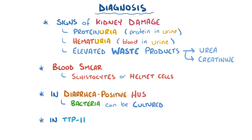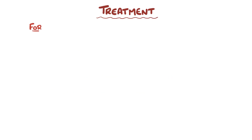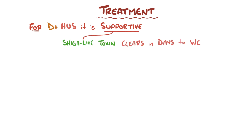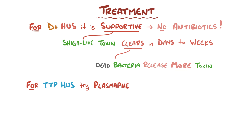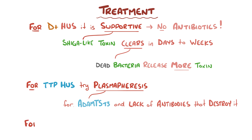In suspected TTP-HUS, ADAMTS13 activity in the plasma can be measured. Treatment of typical or diarrhea-positive hemolytic uremic syndrome is mainly supportive as the shiga-like toxin gradually clears out of the body over days to weeks. It's thought that killing bacteria with antibiotics can potentially result in increased release of toxin from dead bacteria, which can worsen the problem, so antibiotics are not typically recommended. In TTP-HUS, a key treatment option is plasmapheresis, where the patient's plasma is exchanged with plasma that has a normal amount of ADAMTS13 and lacks the antibodies that might be destroying it. Of the various types, atypical hemolytic uremic syndrome usually has the worst prognosis, and treatment usually involves identifying and addressing the underlying cause.